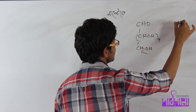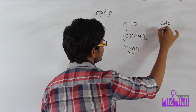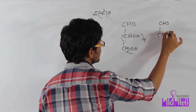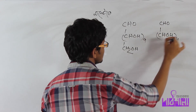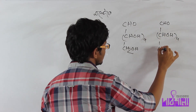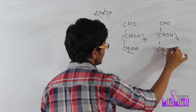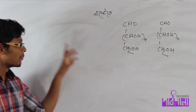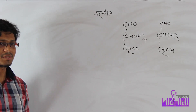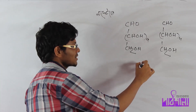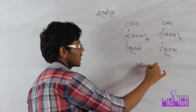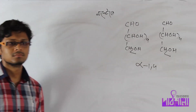The structure includes CHO, CHOH, and CH2OH groups. With maltose, we will get the glycosidic bond, which is alpha-1,4.